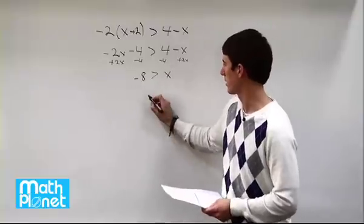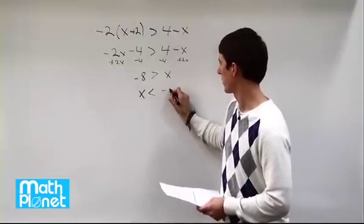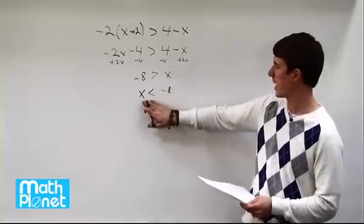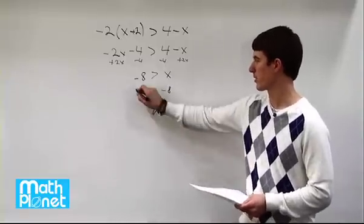We can turn this around and say x is less than negative 8. So you can write it either way. This is the standard way to write this. So we have x is less than negative 8. And that's our final answer.